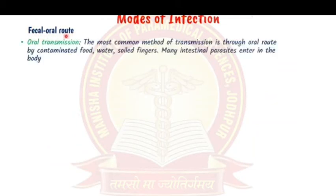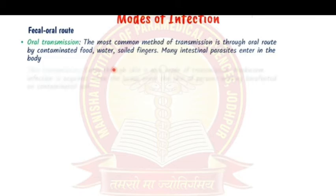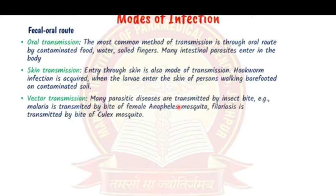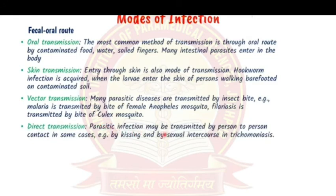Modes of infection: the fecal-oral route is very important, as most parasites enter the body this way through contaminated food or water. Skin penetration occurs in hookworm infection, where larvae enter through bare feet on contaminated soil. Vector transmission occurs via insect bites — for example, malaria from the female Anopheles mosquito and filariasis from the Culex mosquito.